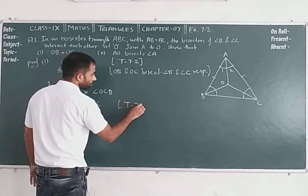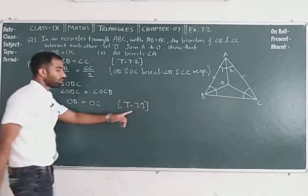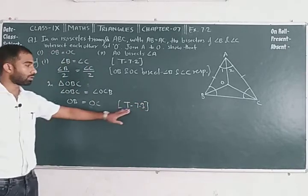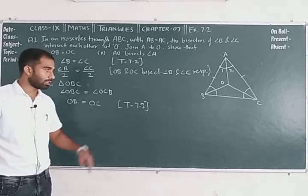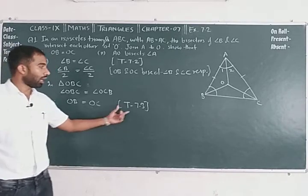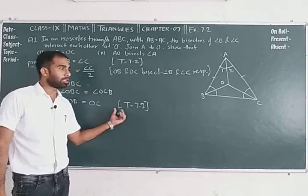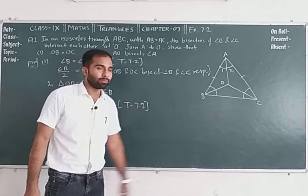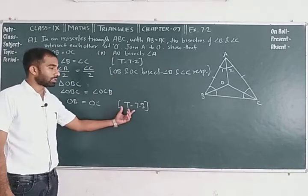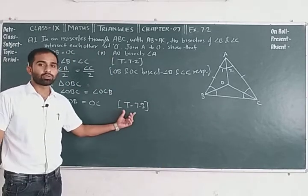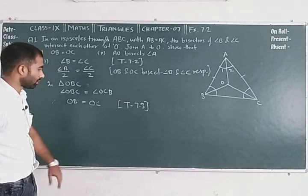What does Theorem 7.3 say? Theorem 7.3 — you should memorize it. Sides opposite to equal angles are equal in length.